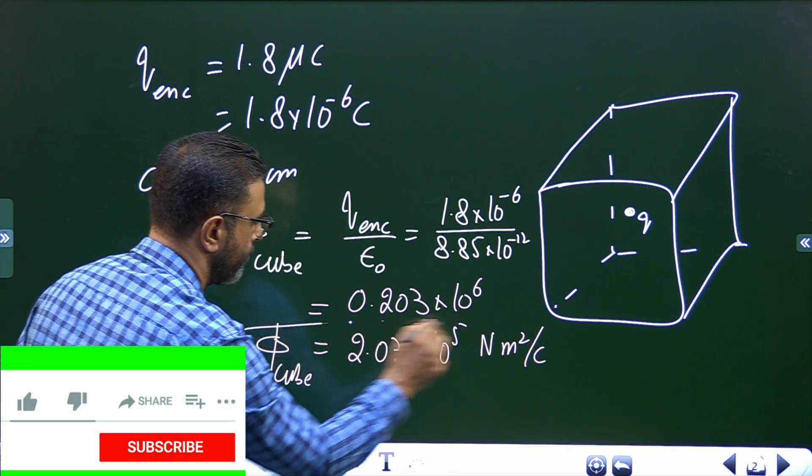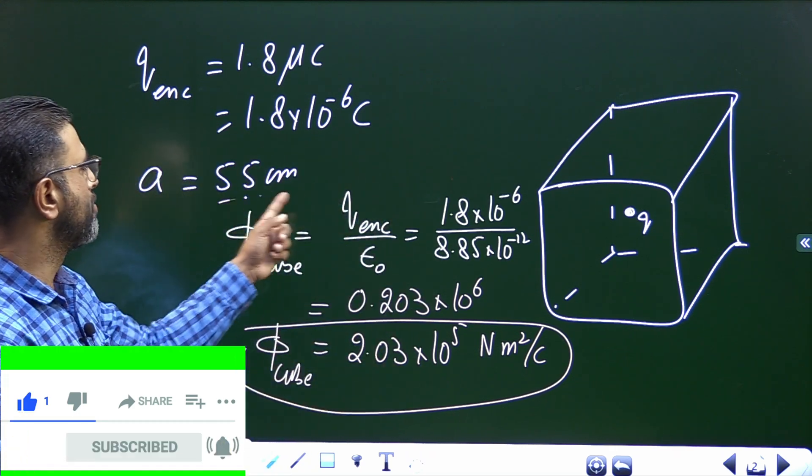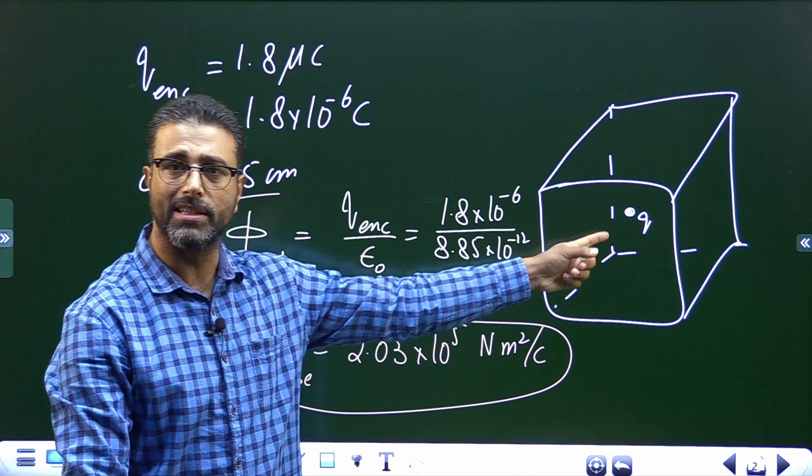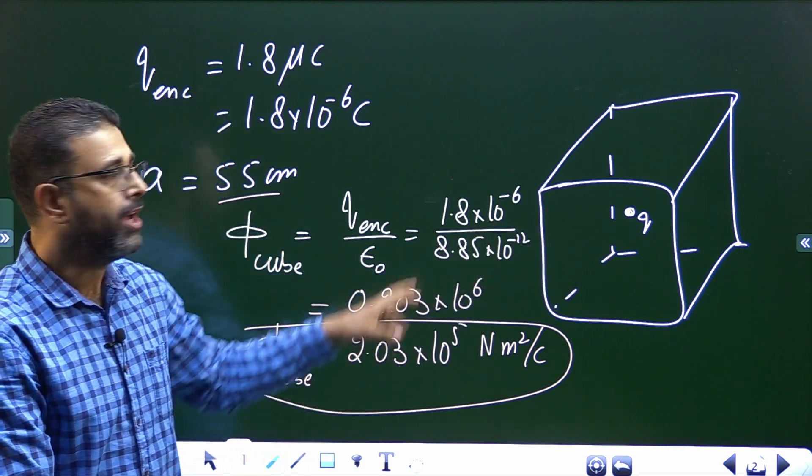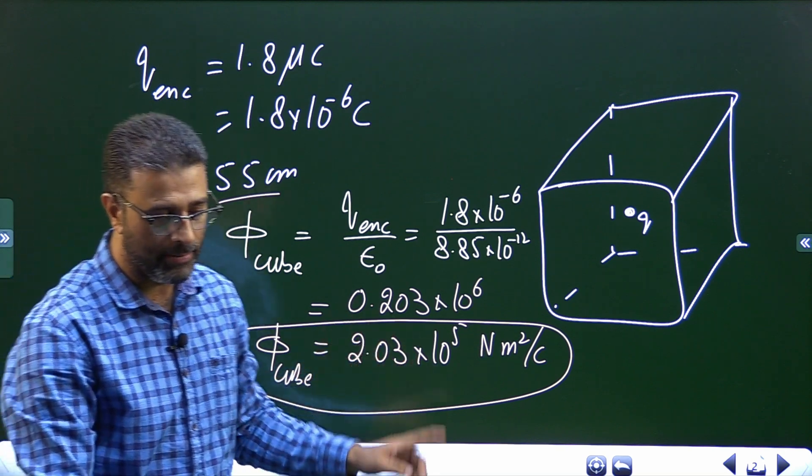Side of the cube, it doesn't matter. Even if you have a bigger cube with the same charge inside it, flux will be same. Smaller cube with the same charge inside it, flux will be same. Flux is independent of the size of the cube as long as charge is lying inside it.